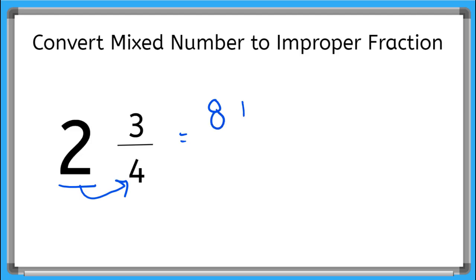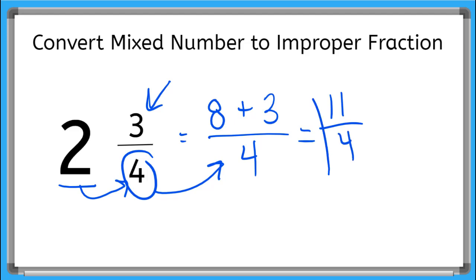And then we take that 8 and we add it to the numerator, which is 3. The denominator of the fraction stays the same, so it's 4. Then we add our numerator: 8 plus 3 is 11 over 4. So here's our improper fraction that's top-heavy, bigger numerator than the denominator, and it's equal to 2 and 3 fourths, our mixed number.